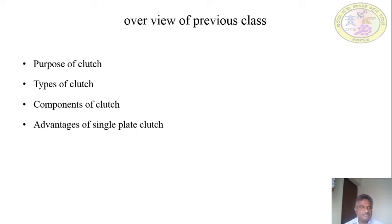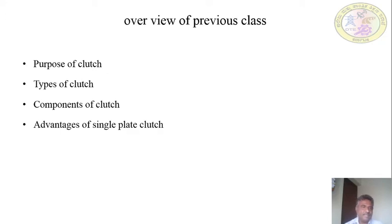There are basically three types of clutches: friction clutch, positive clutch, and fluid flywheel. In this chapter we are concerned only with friction clutches. The types of friction clutches are: cone clutch, single plate clutch, multi-plate clutch, centrifugal clutch, and semi-centrifugal clutch.